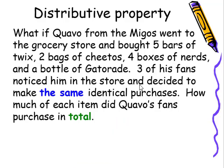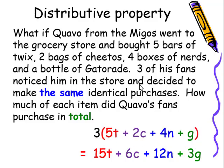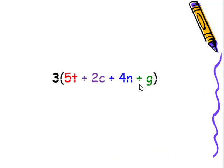But how does this relate to mathematics? Well, instead of writing those long words, we could just use variables. T for Twix, C for Cheetos, N for Nerds, and G for Gatorade. And then we can write expressions saying, the three outside the parentheses would be the three fans. Now, if we wanted to figure this out, all we have to do is use the distributive property.